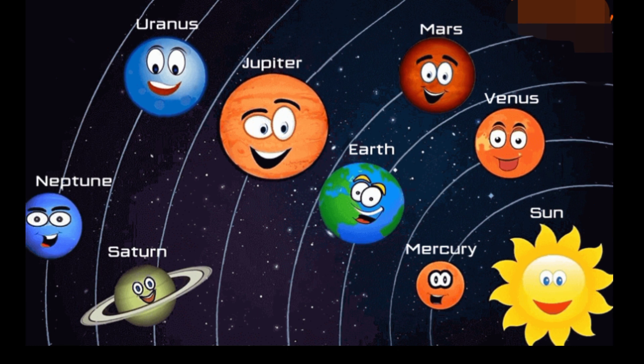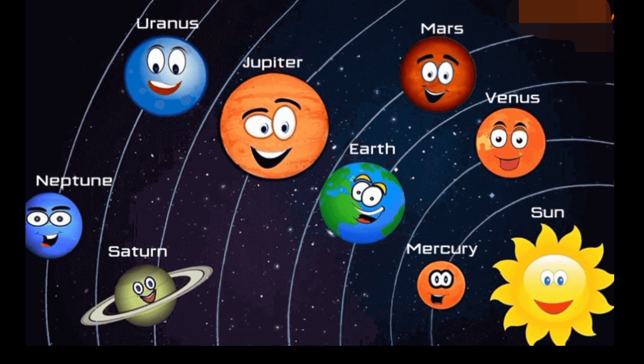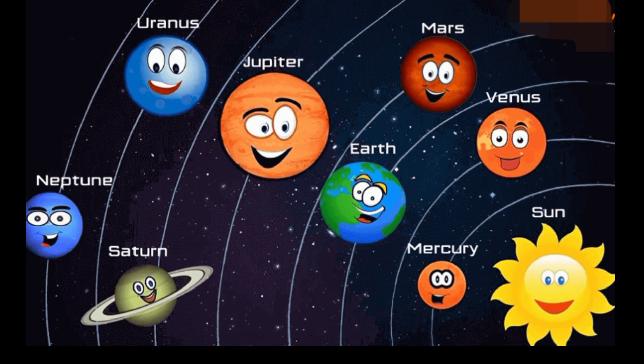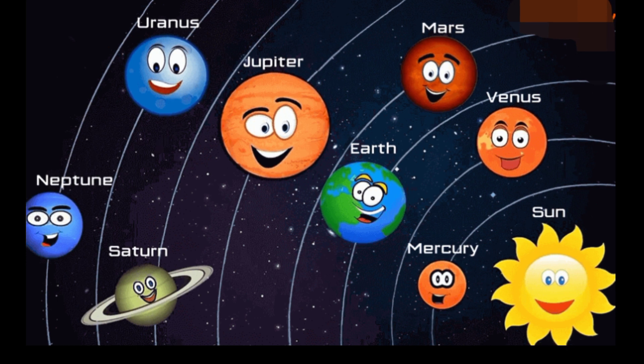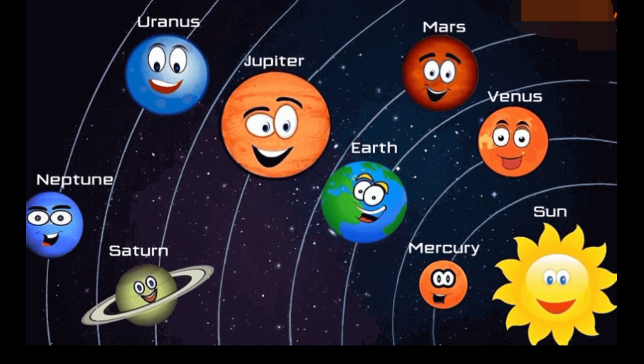Venus spins slowly in the opposite direction from most planets. A thick atmosphere traps heat in a runaway greenhouse effect, making it the hottest planet in our solar system.